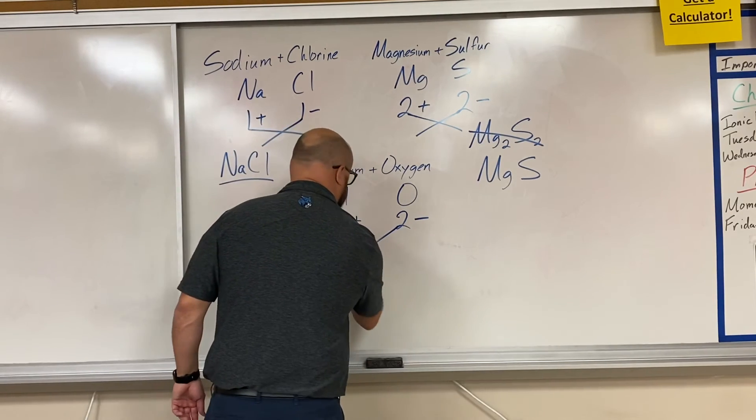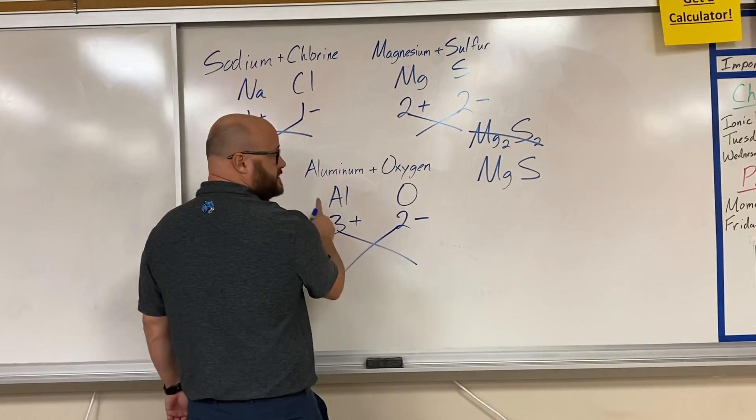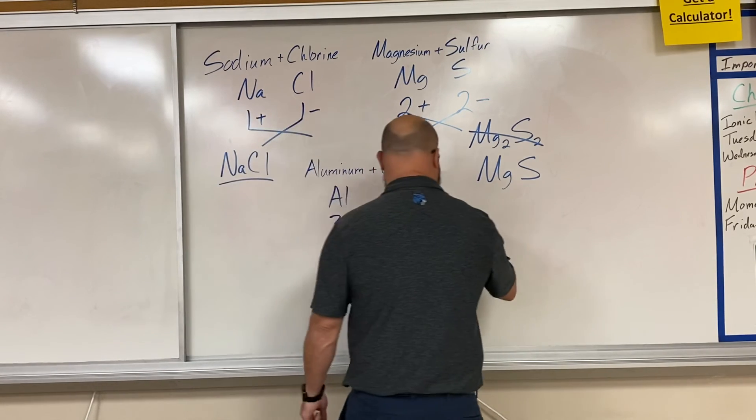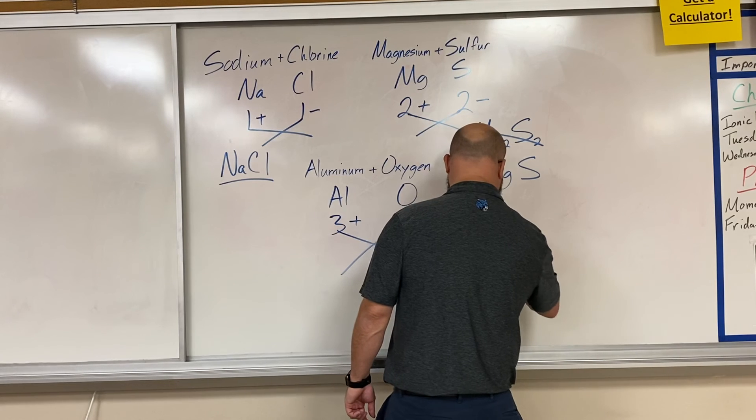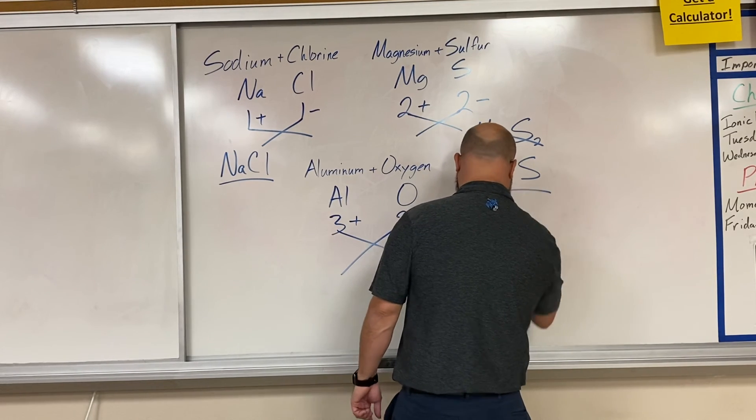And then lastly, criss-cross applesauce. The 2 goes to the aluminum, the 3 goes to oxygen. Our final formula: Al2O3.